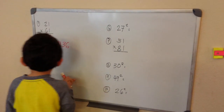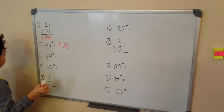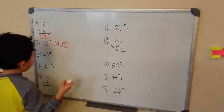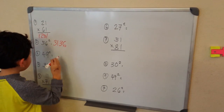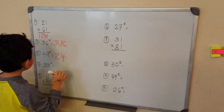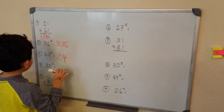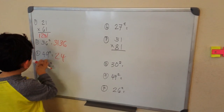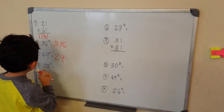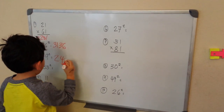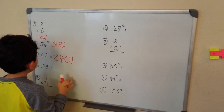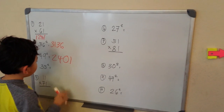49 squared. 15 plus 9 is 24. And how far is 49 away from 51? 1 squared: 0, 1. 2,401.